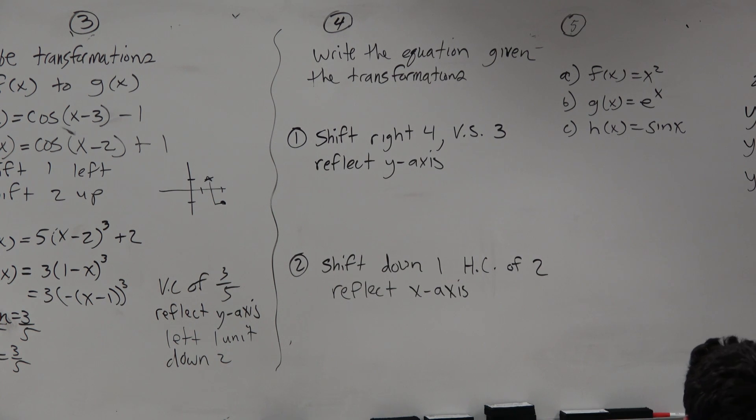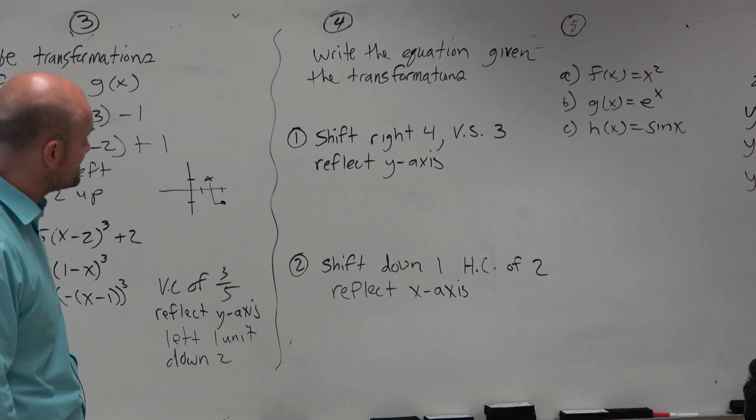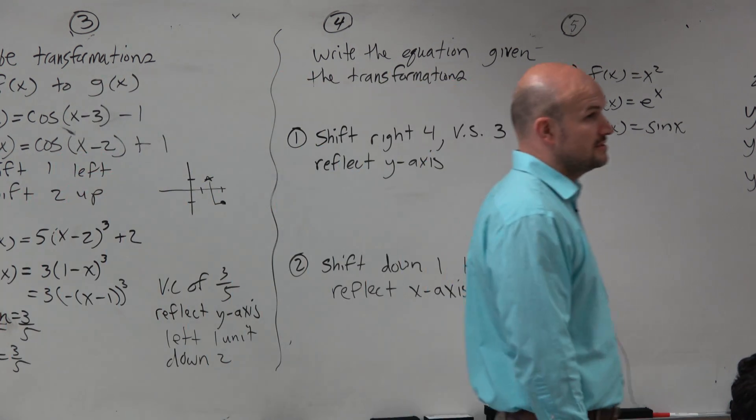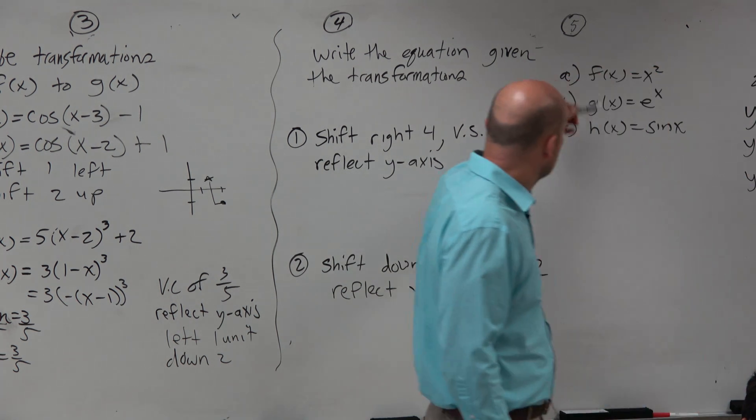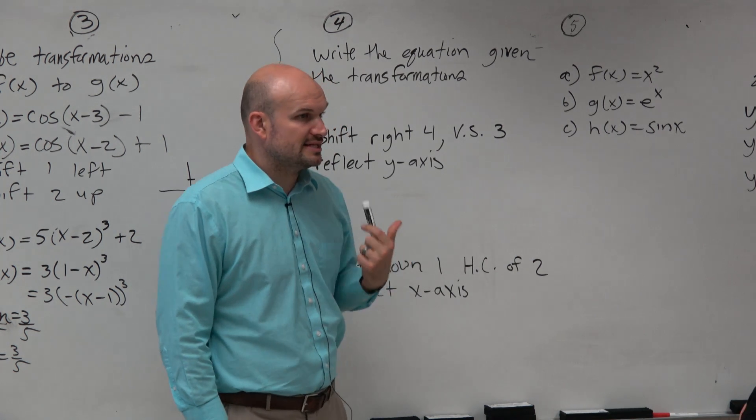There is one last thing I just want to make sure we're all kind of aware of here. So last one is shift right 4, vertical shift 3, and reflect the y-axis. And basically what the question is asking, write the equation given the transformations. So now I'm going to give you the transformations, and I'm going to give you some parent functions. So I gave you these three. And basically what I'm asking you is can you rewrite the expression?